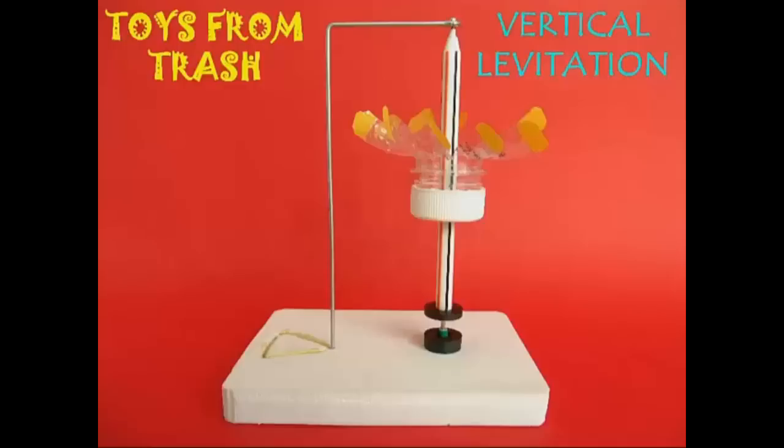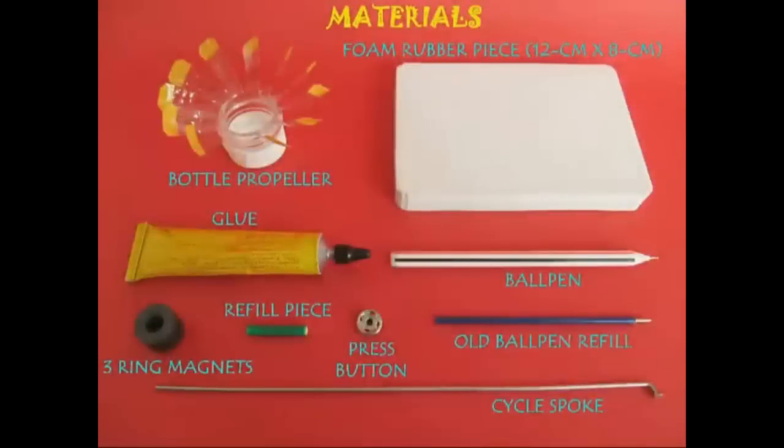For this, what you need is a foam rubber piece, a bottle propeller, some glue, Fevibond glue, refill piece, three ring magnets, press button, ball pen, old pencil refill, and a cycle spoke.